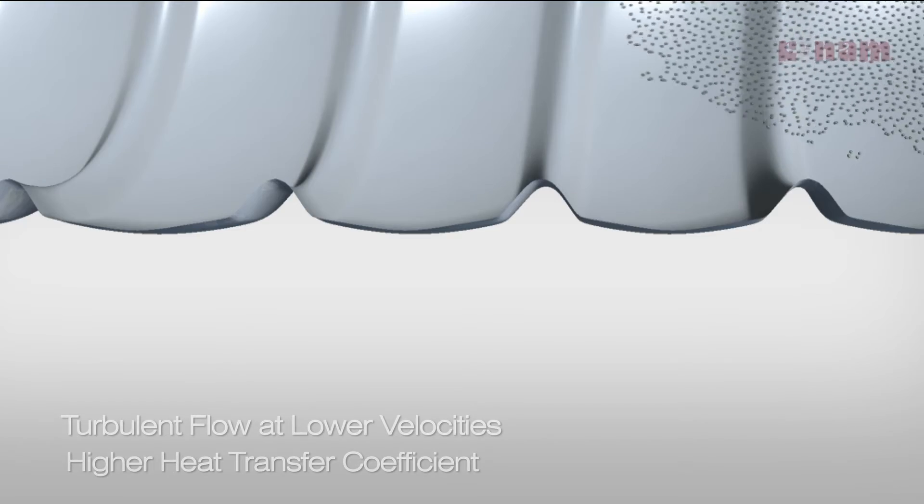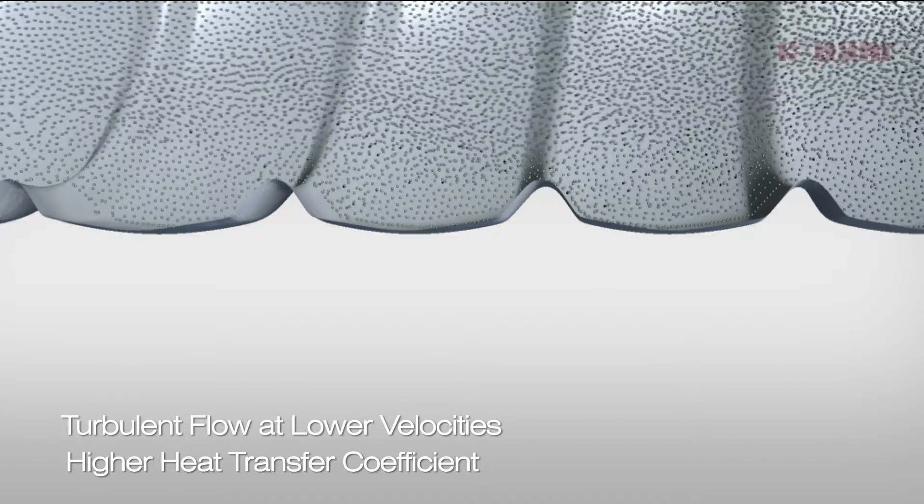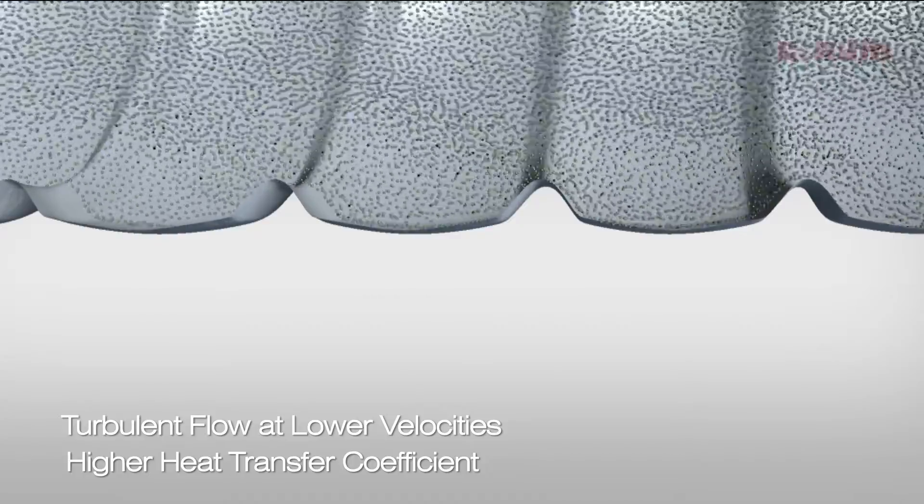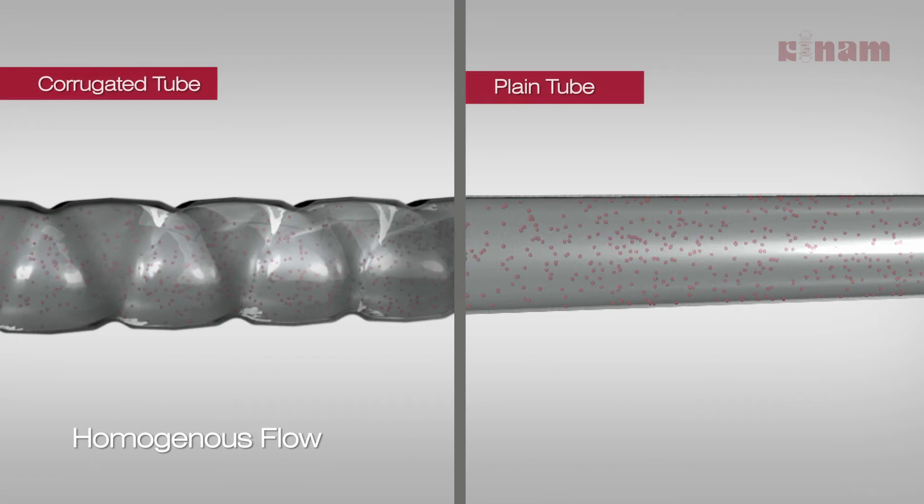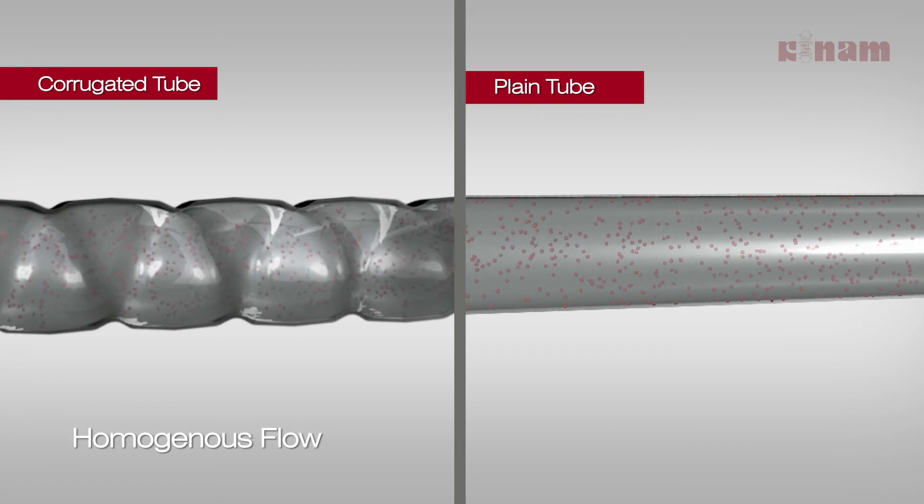Thus, corrugated tubes induce turbulence in the fluid, even at lower velocity at the peripheral layer, which results in higher heat transfer coefficient. The two-regime flow enables thorough mixing of the fluid, ensuring homogenous fluid mass rather than layered flow pattern.